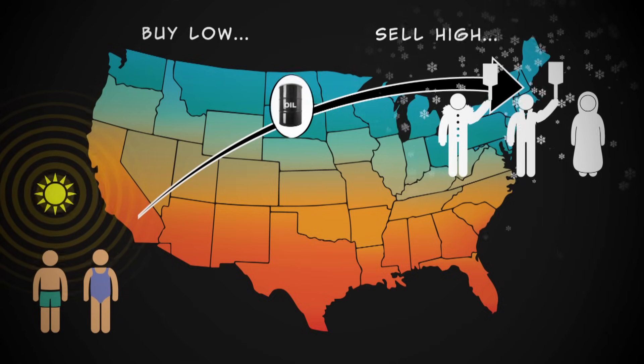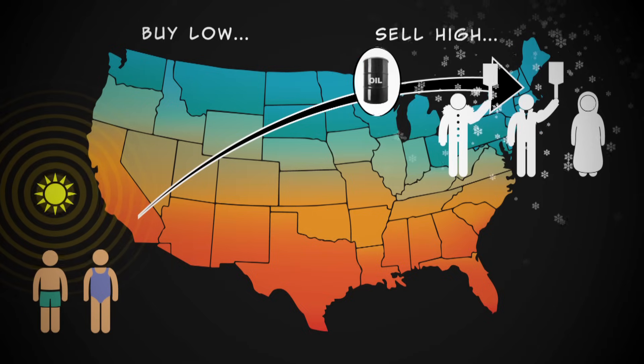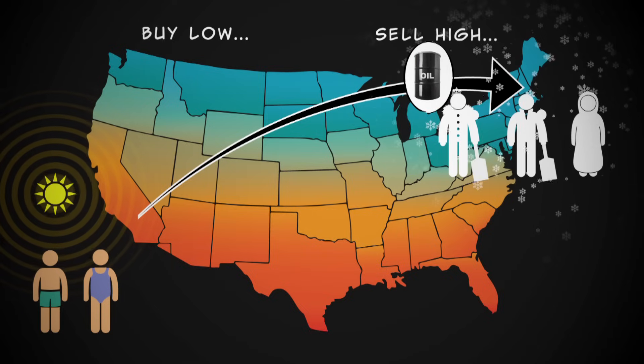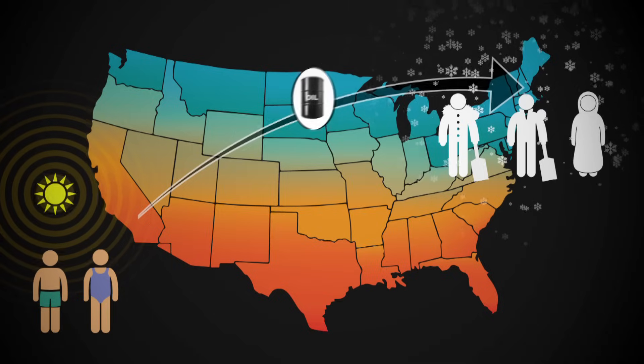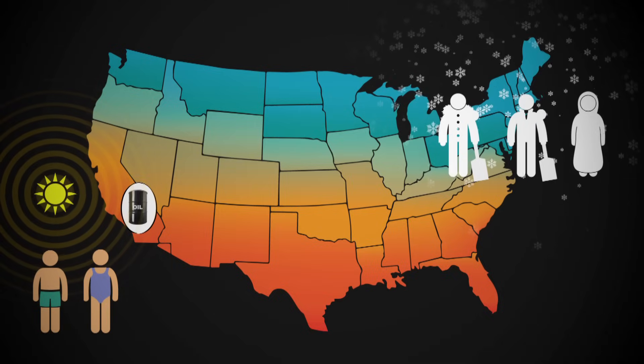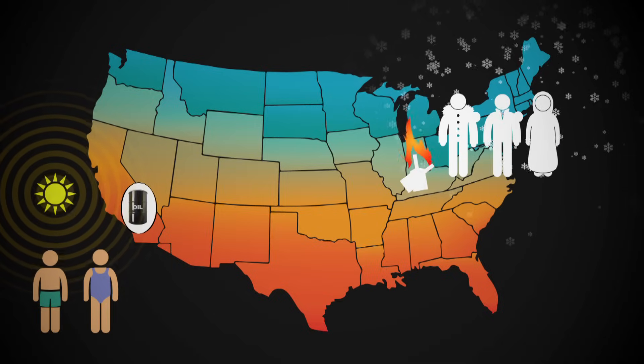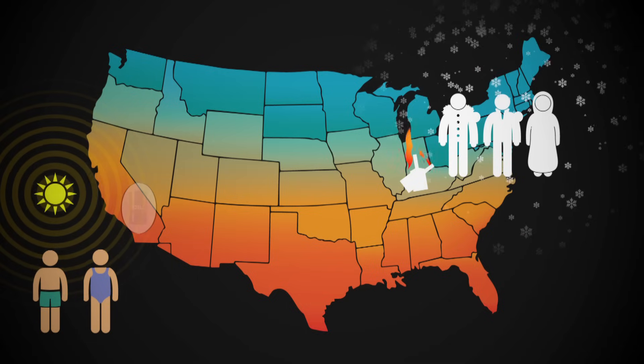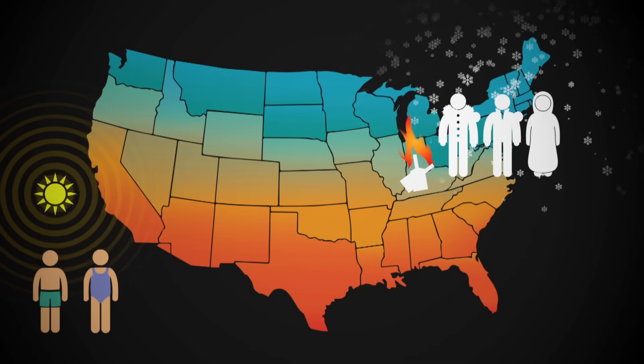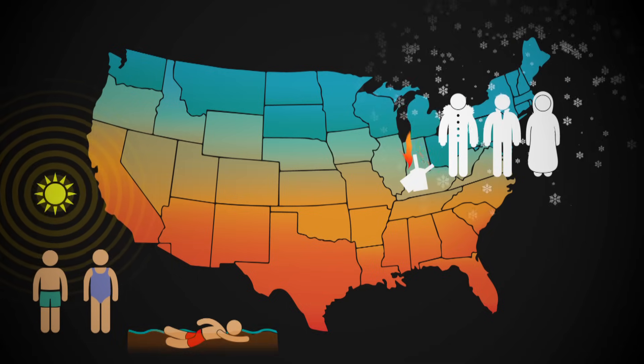With price controls in place, high-value consumers of heating oil couldn't bid up the price. And so there was no incentive for entrepreneurs to bring oil to where it was in greatest demand. As a result, in the harsh winter of 1972 to 1973, people were freezing on the East Coast even as people elsewhere in the United States had enough oil to heat their swimming pools.